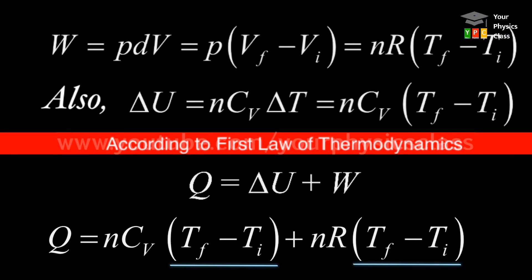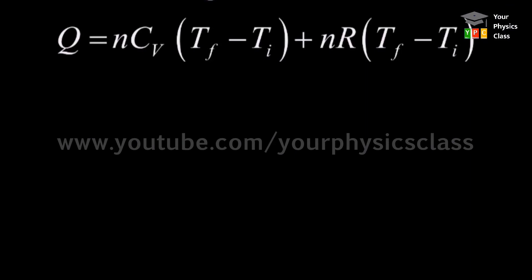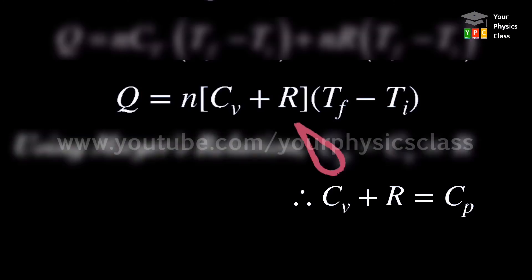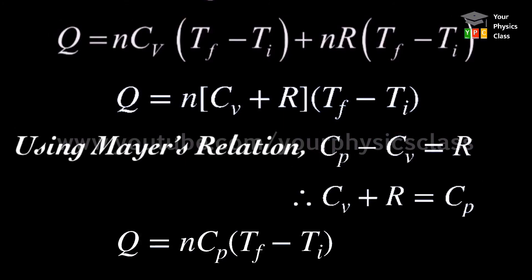Here, the term change in temperature and number of moles n both are constant, thus taken common. So the equation takes the form Q equals n times (Cv plus R) into (Tf minus Ti). Using Mayer's relation, Cp minus Cv equals R, we get the value of Cv plus R which is equal to Cp, that is specific heat at constant pressure. So the equation becomes Q equals n times Cp into change in temperature.